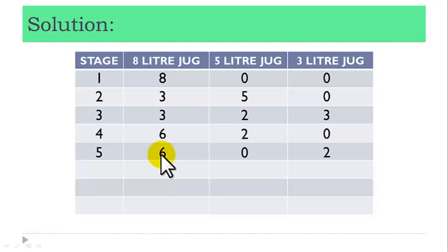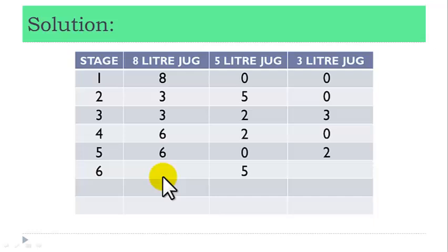Stage 6: fill the 5-liter jug with fluid from the 8-liter jug. Then we are left with 1-liter fluid in the 8-liter jug, and we still have 2-liter fluid in the 3-liter jug.